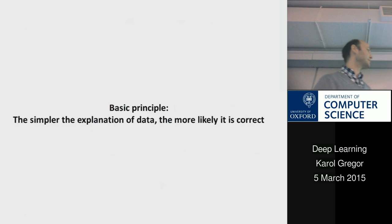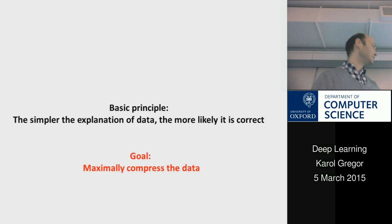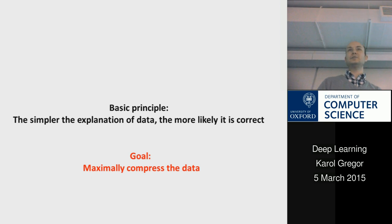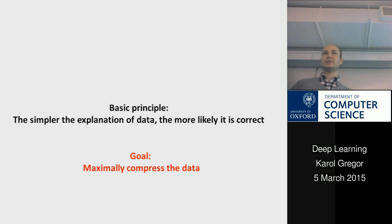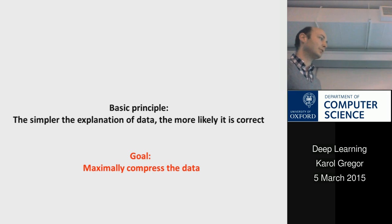We need some principle to force non-trivial learning. One principle is to find a simple explanation of the data — equivalent to maximally compressing the data. If you can compress the data, that means you are exploiting some structure: you noticed certain things go together, so you don't have to represent them independently. We take compression as our goal and will see whether that works.